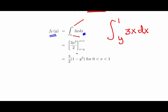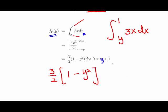Evaluating at x = 1 gives 1, and at x = y gives y². Taking the 3/2 factor out, the marginal density of y is (3/2)(1 − y²) for 0 ≤ y ≤ 1. Those are our two marginal density functions for x and y.